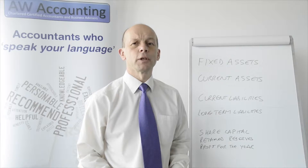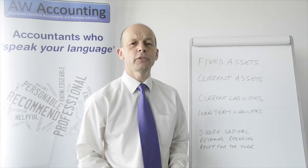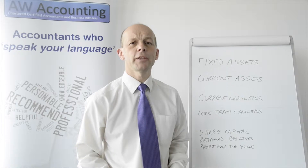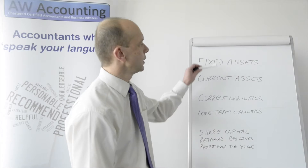Last time we looked at the profit and loss account, and this time we're going to look at the balance sheet and where the money that you made on the profit and loss goes to. The balance sheet records the value of the assets in the company in various sections depending on their nature. We'll start off at the top with the fixed assets.